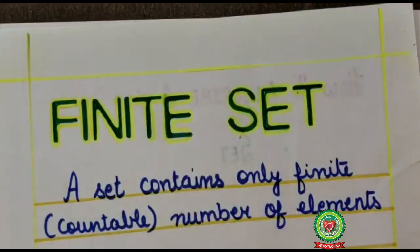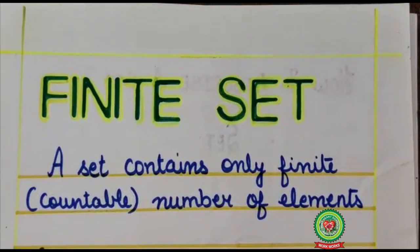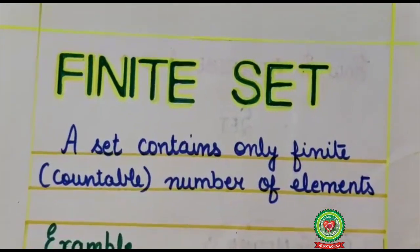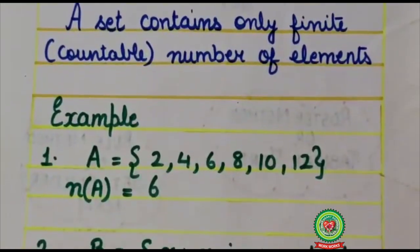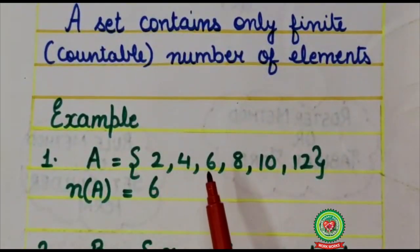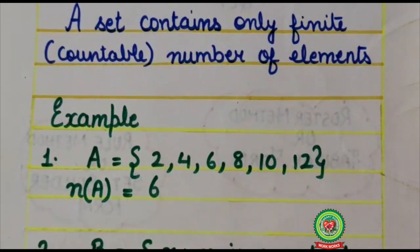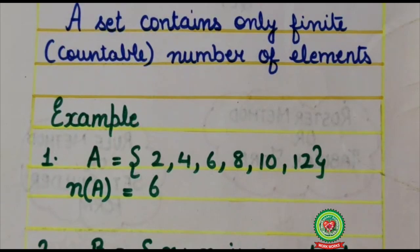So what is finite set? A set contains only countable number of elements is known as a finite set. Let's understand with examples. Here set A is {2, 4, 6, 8, 10, 12}. Its cardinal number is 6. That means it is having only 6 elements. These are countable. So it is a finite set.